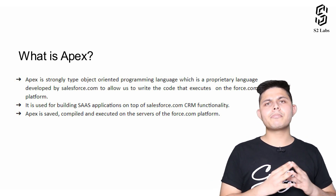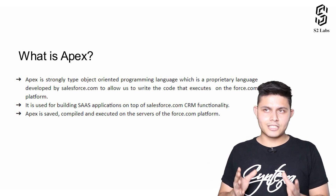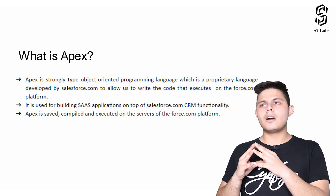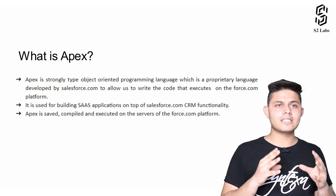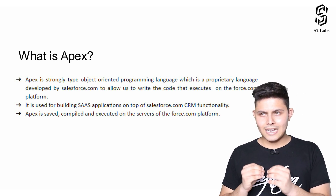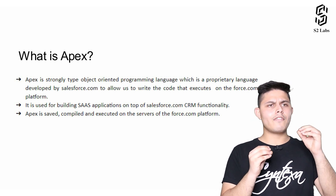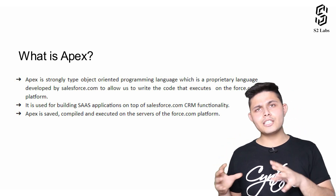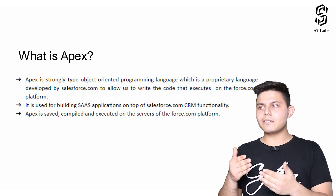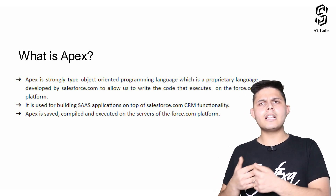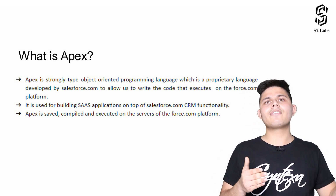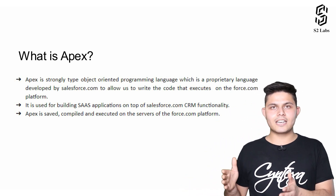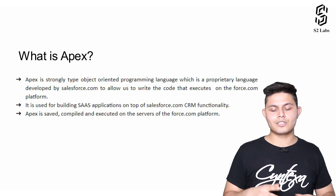Next, object-oriented programming language. Object-oriented programming language is nothing but an easy classification of classes and objects, with the help of which you can create programs that are reusable and for which you can create different instances of different classes. So APEX is a strongly typed, object-oriented programming language.